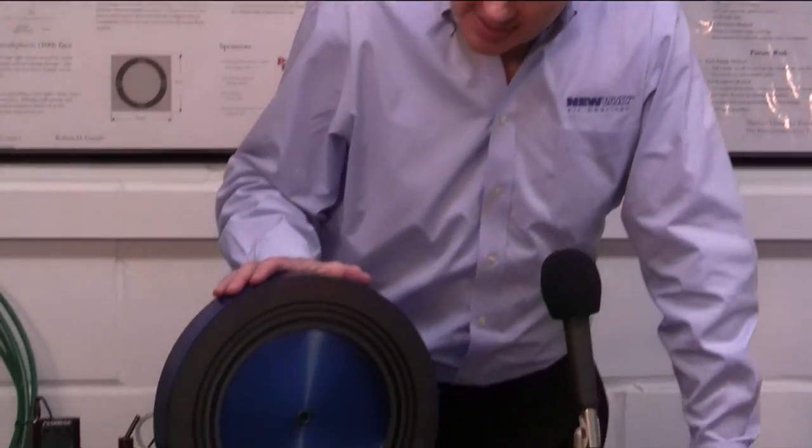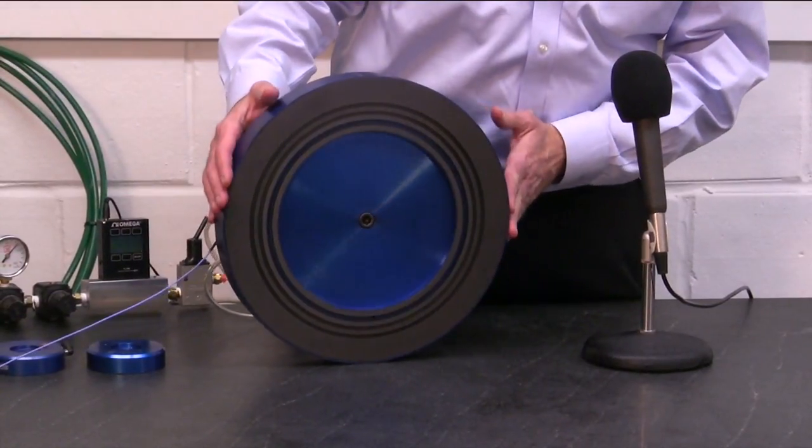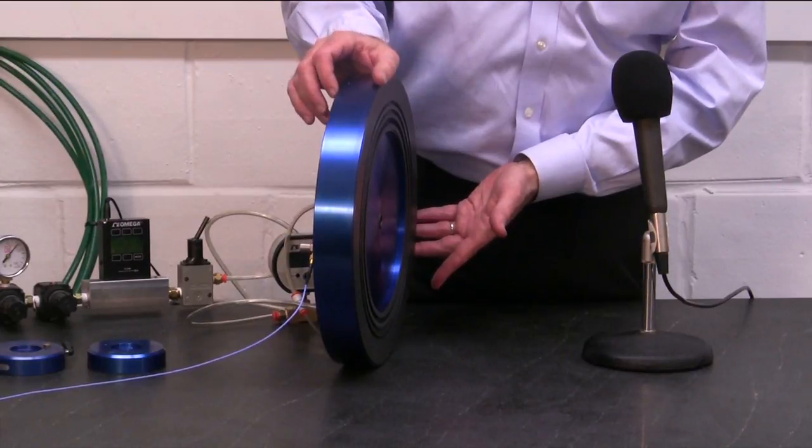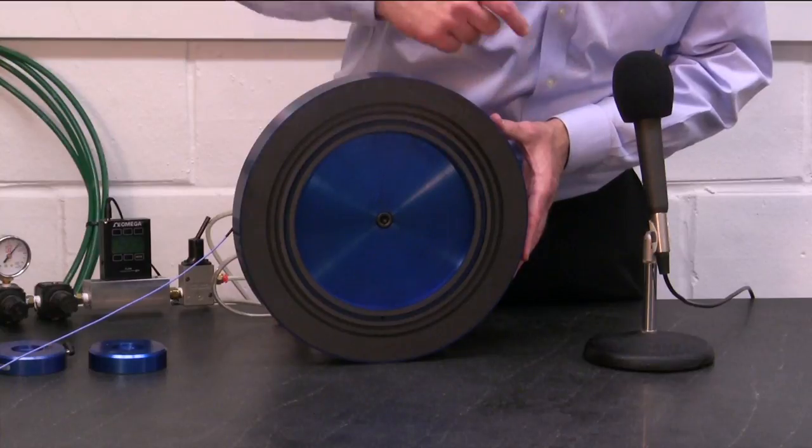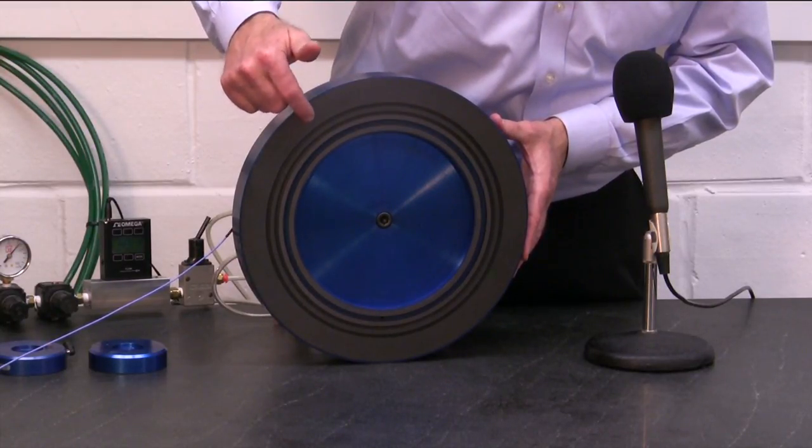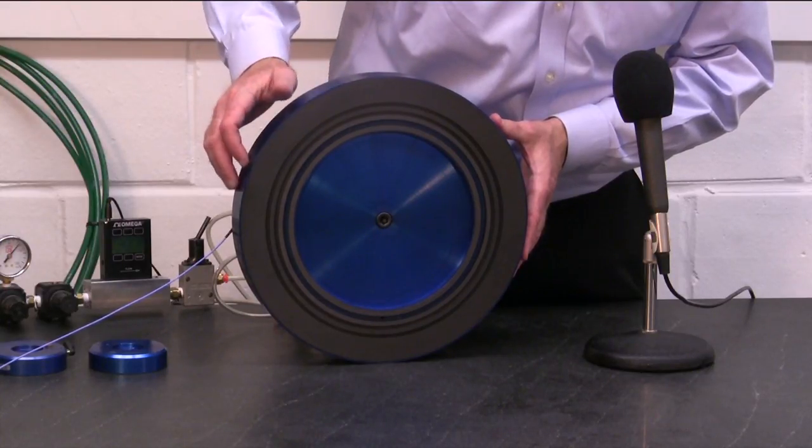What we have here as a subject to study is a vacuum preloaded air bearing. It's 13 inches in diameter and about two inches thick. We have about 80 square inches of vacuum area inside, and 35 square inches of air bearing pressure land at the perimeter. The two regions are separated by an ambient groove.